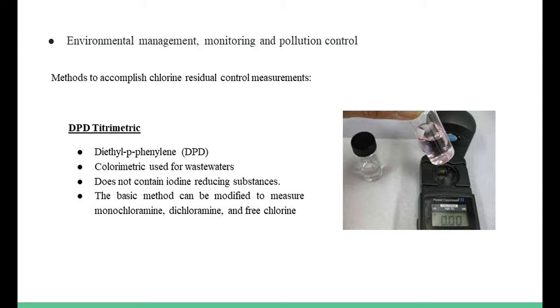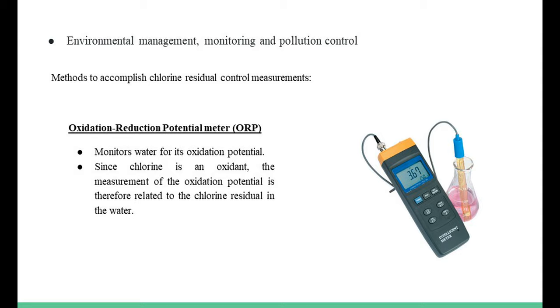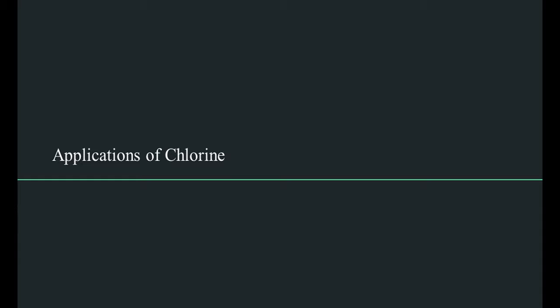Oxidation reduction potential meter, ORP. Another means of monitoring chlorine is ORP. The ORP instrument monitors water for its oxidation potential. Since chlorine is an oxidant, the measurement of the oxidation potential is therefore related to the chlorine residual in the water.